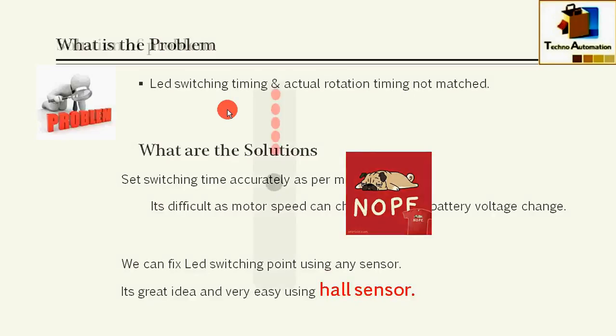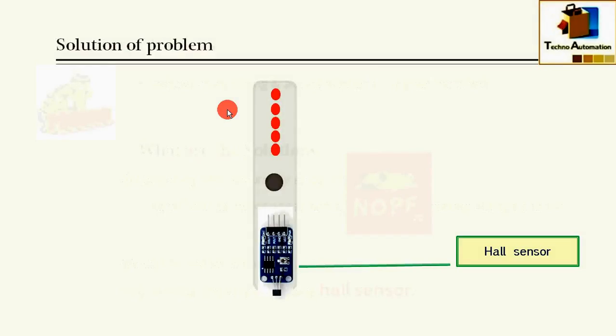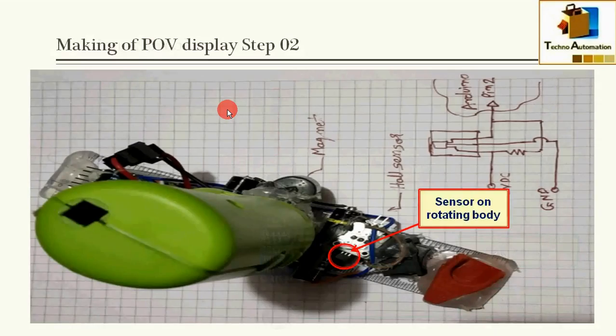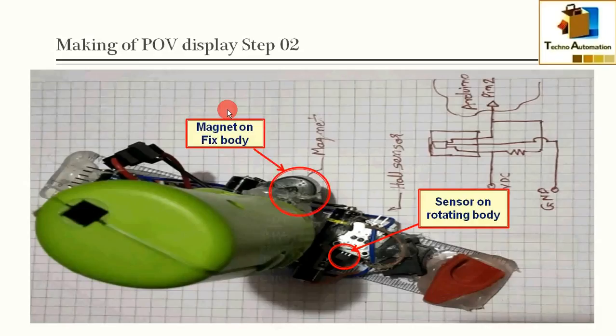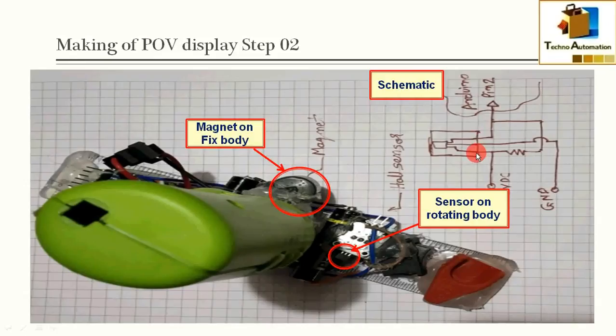Finally, I have installed one Hall sensor on the scale and fixed one magnet on the fixed body. This is the actual mounting of Hall sensor and actual mounting of magnet. The VCC pin of the Hall sensor is connected with Arduino 5 volt pin, the ground pin is connected with ground, and the signal pin is connected with Arduino pin number 2.